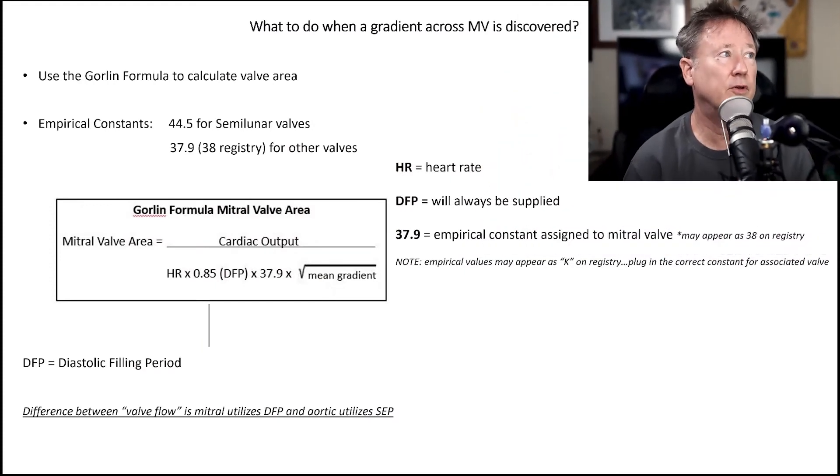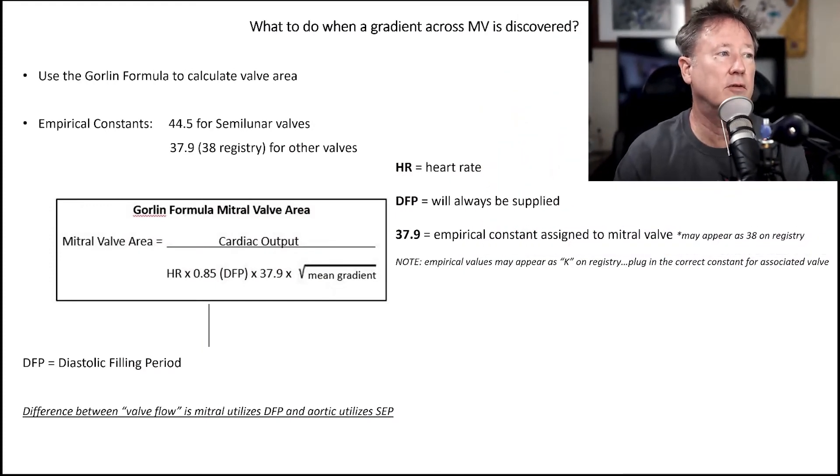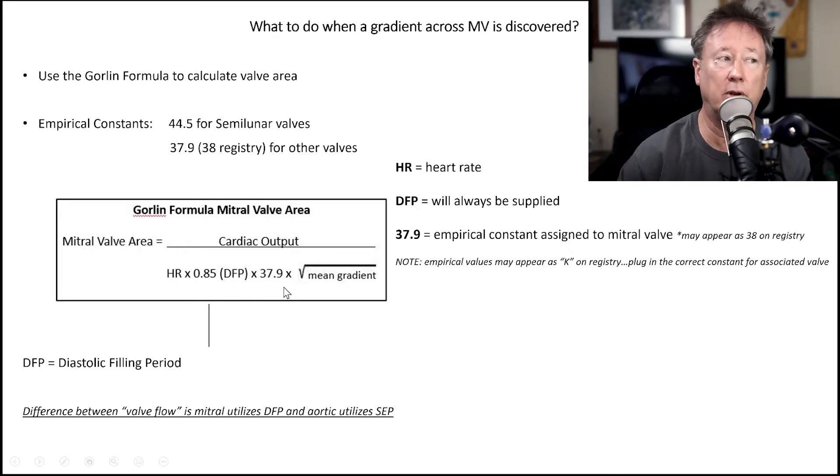So let's take a look at some of these formulas and information. For the mitral valve, for the Gorlin formula, here is the formula that you can use. There's two different formulas. This is the one that I find easiest to remember: cardiac output divided by heart rate times the diastolic filling period times a constant of 37.9 times the square of the mean gradient. The cardiac output has to be in milliliters. So if you have five, you have to multiply it by a thousand, or 6.2, you have to multiply it by a thousand.